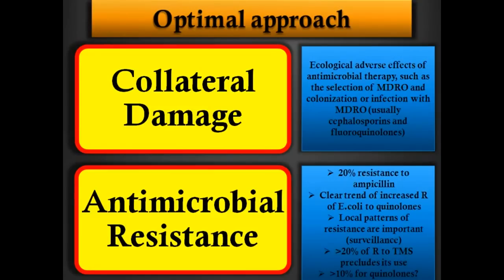The E. coli in our population changes all the time, and local patterns of resistance are very important. There are cutoff breakpoints that preclude the use of some antibiotics. For Bactrim, we should not use it empirically if resistance in the community exceeds 20% — this is based on mathematical models and expert opinion. For quinolones, the breakpoint is 10%. We need to know, in our community, the percentage of resistance to these two drug groups.